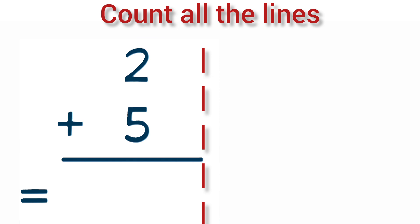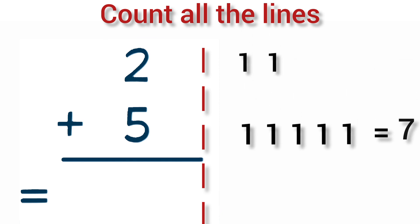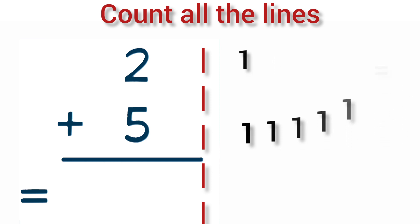Add 2 plus 5. 2 lines plus 5 lines is equal to 7. So, 2 plus 5 is equal to 7.